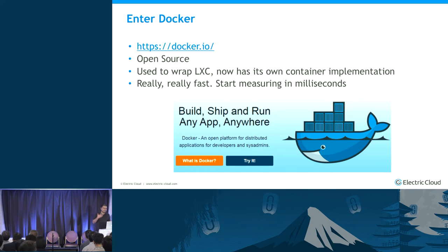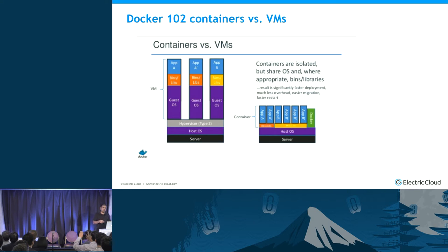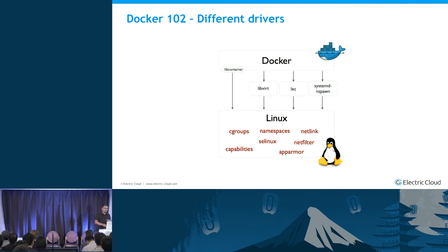Docker is open source and used to wrap LXC. I'll explain this as if explaining to a co-worker what the value prop of Docker is. VMs we're all familiar with — there's a hypervisor. Take that away with containers; there's a little bit of kernel shared between host and guest. All Docker is doing is wrapping the core Linux primitives — namespaces and cgroups — implemented in Go. It used to be called libcontainer, now it's called runc. On Linux, all they're doing is wrapping the Linux kernel in Go, and on Windows they'll be doing the same for Windows Nano Server.